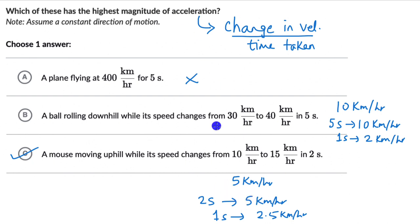This also tells us something interesting: it's not necessary that high velocity means high acceleration. In option B, the velocity goes from 30 to 40 — higher than the 15 in option C — but the acceleration in B is less because the change in velocity happened more slowly compared to option C.